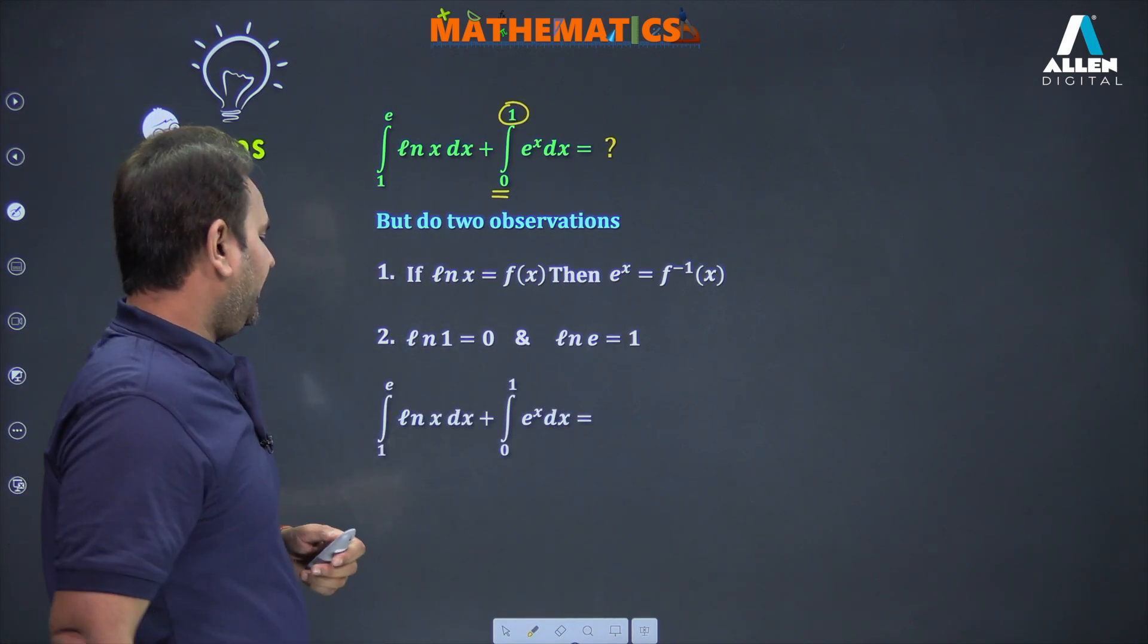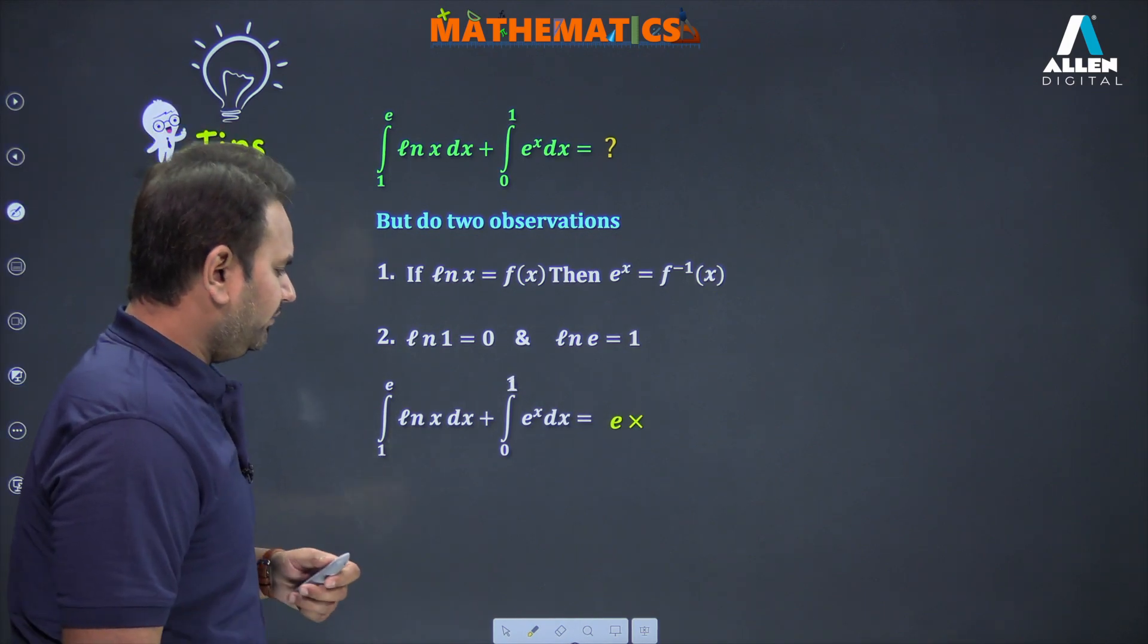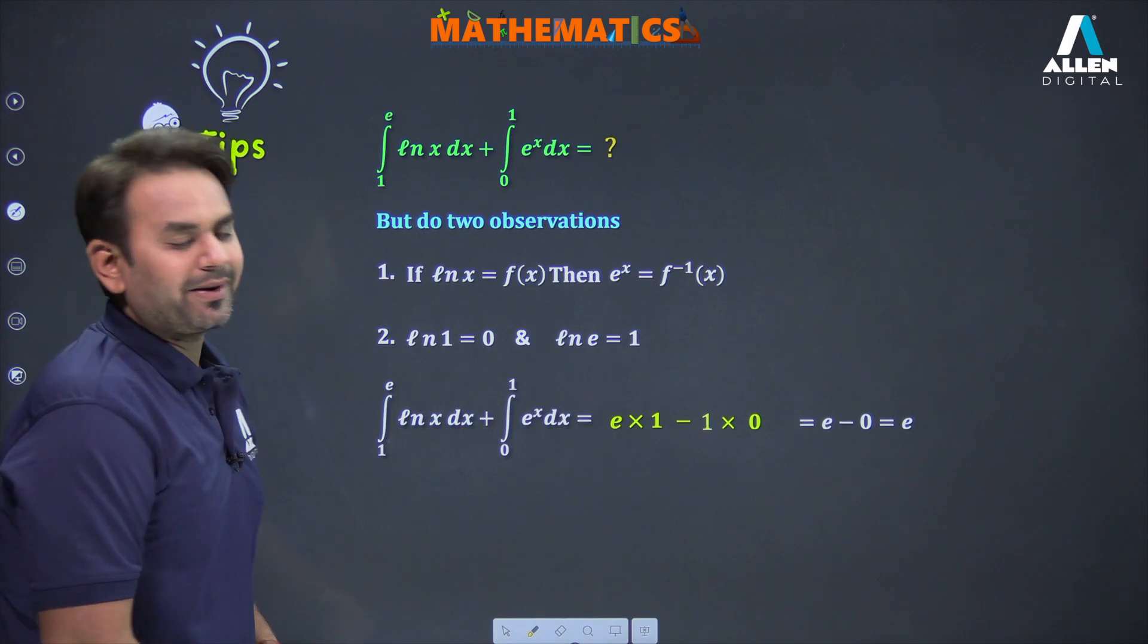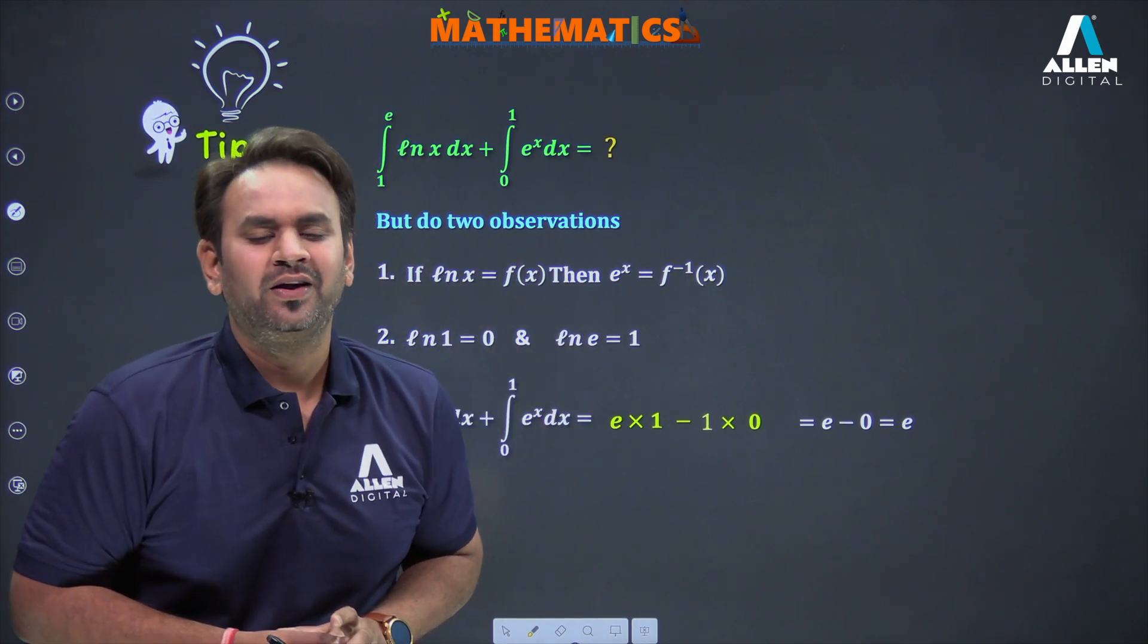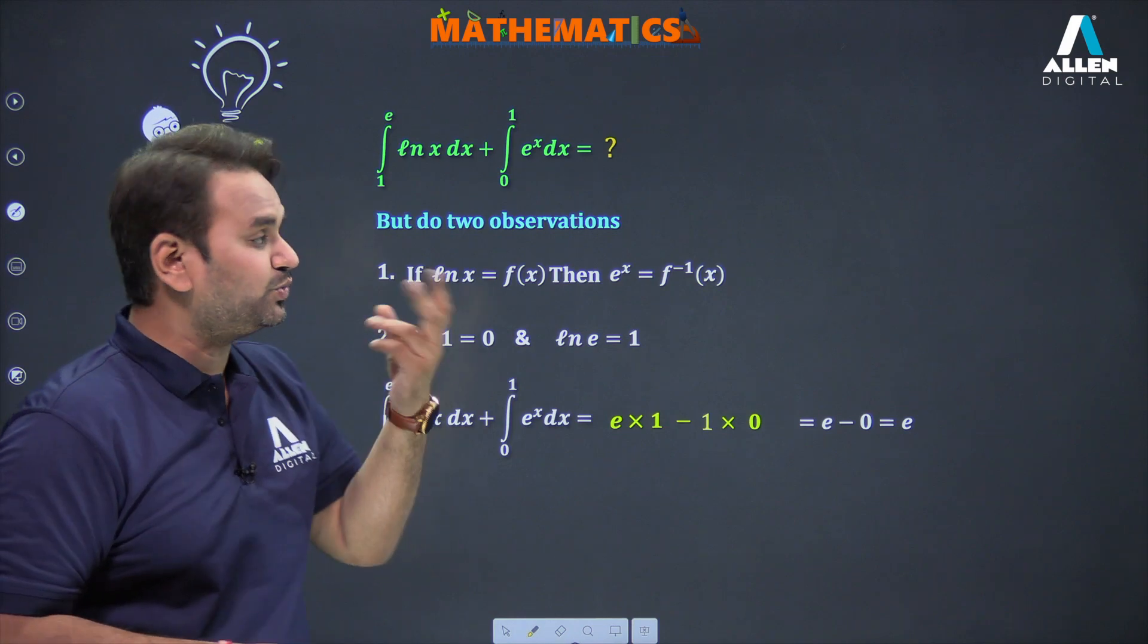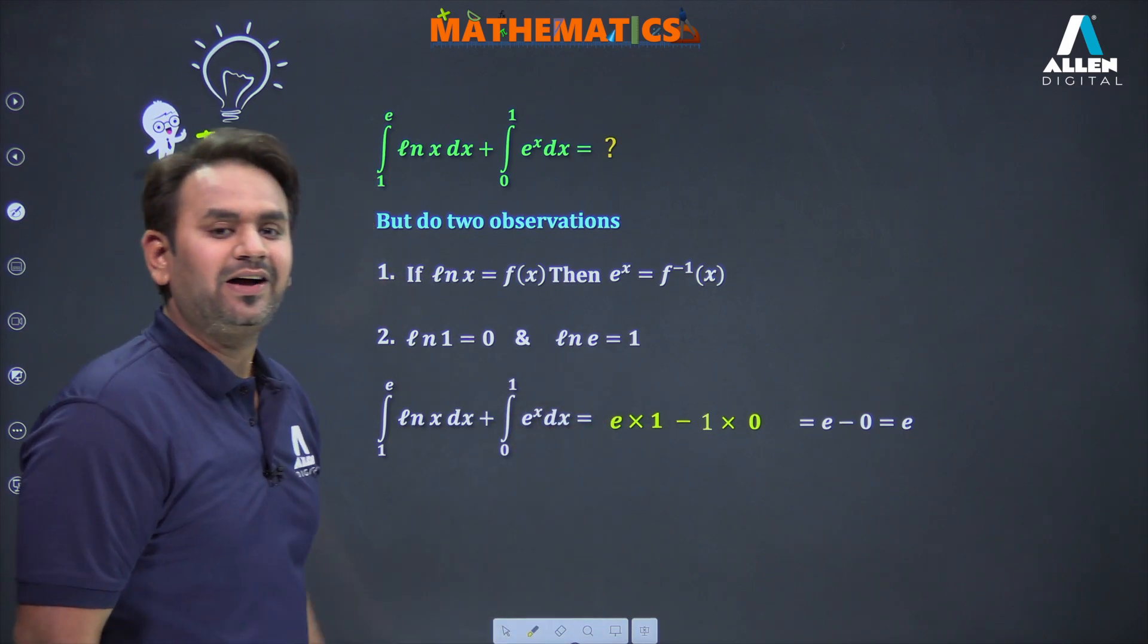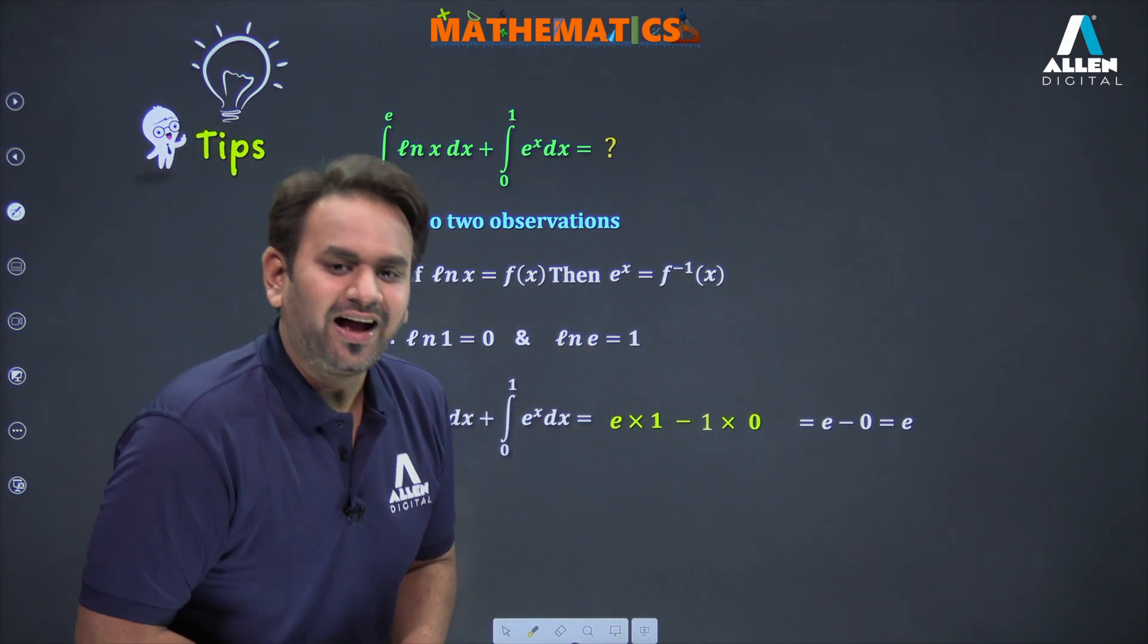These two observations you need to keep in mind. Now if you solve these two integrations, we saw they equal e times 1 minus 1 times 0. You might ask how I wrote this directly. I'll explain through the same observations. The answer is upper limits multiplied, which is e times 1 as you saw here, minus lower limits multiplied, which is 1 times 0. That equals e, which was the answer to the question.